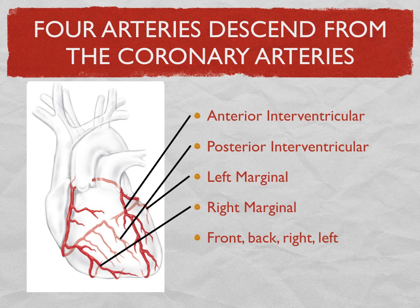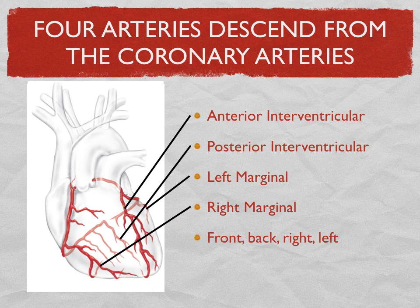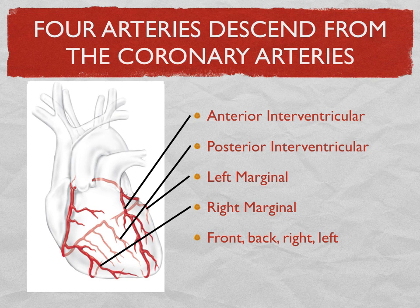The heart is just slightly rotated, so the right side is more visible and the left side is more hidden. So when you go to name these seven arteries, if you think about it in two groups it's not that difficult: you've got right and left coronaries and the circumflex continuing the left, then the four that descend.